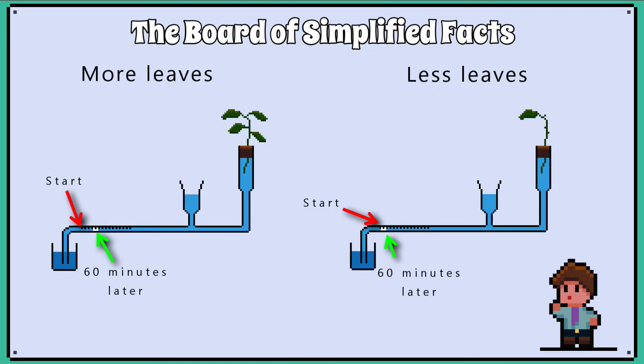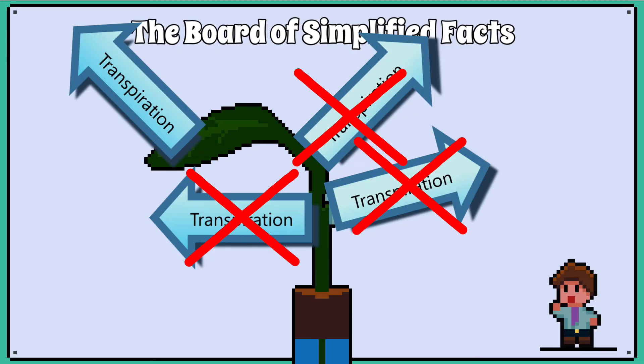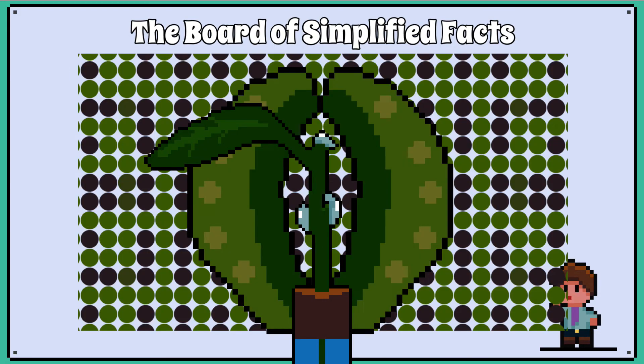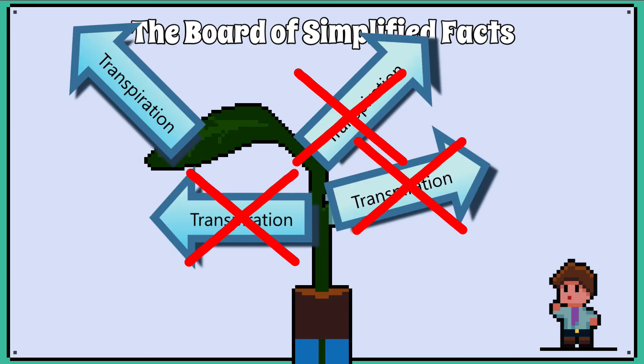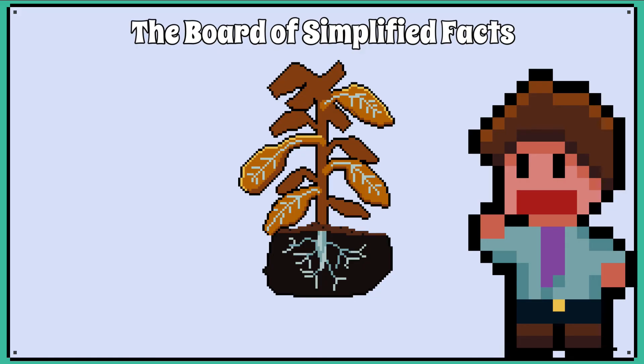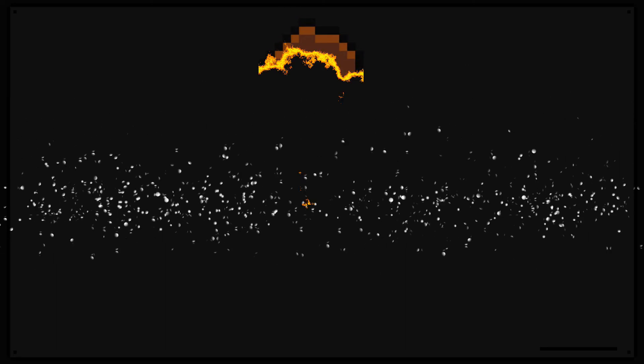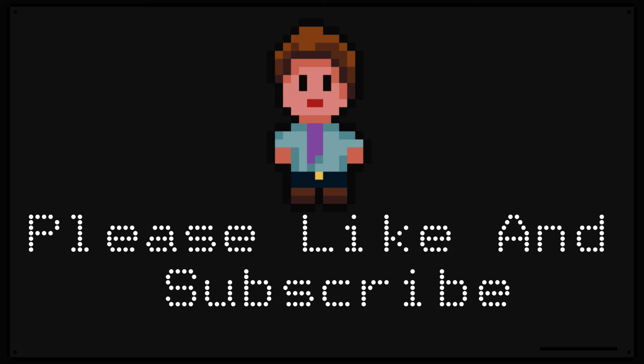Another factor that reduces the rate of transpiration is reduced surface area. To achieve this, you can remove one or two leaves off the plant's cutting, but you must remember to seal the now exposed stem with some Vaseline to reduce water loss. The transpiration rate is lower because there are fewer stomata, meaning less water leaves the plant via transpiration. In the next lesson, we will look at the transportation of sucrose via the phloem, and what happens to a plant when it is deficient in specific nutrients.